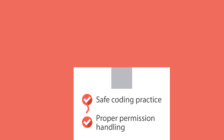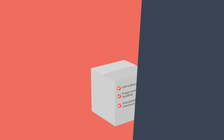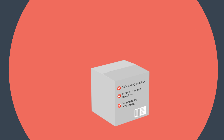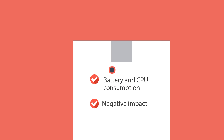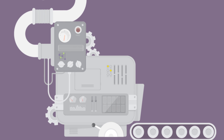But is writing secure code also on your task list? Do you follow a development life cycle which includes safe coding practices, proper permission handling under Android, vulnerability assessment? Do you look at the battery and CPU consumption and the negative impacts for the devices before you release your app?